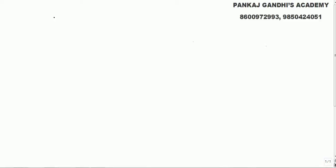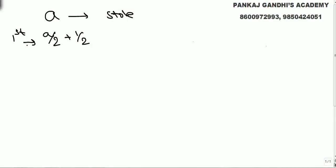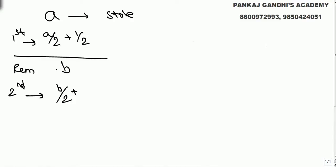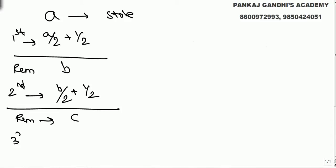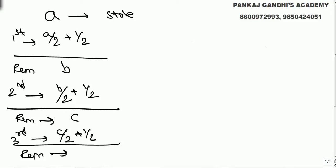The question is: a person stole a number of oranges. To the first guard, he gave half of the remaining plus half an orange extra. Let's say after giving to the first guard, remaining was b. To the second guard, he gave half of b and half more. After giving to the second guard, he was left with c. To the third guard, he gave half of c and half more, and remaining at the end is d, which equals 1.